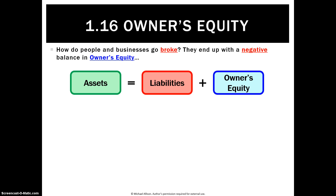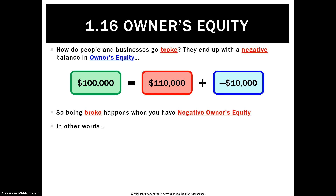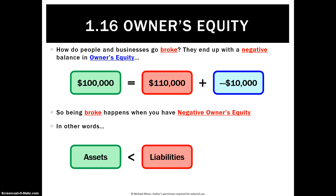How do businesses and people go broke? Essentially they end up with negative owner's equity. For example, if you had a $100,000 asset but owed $110,000, you'd have negative owner's equity. Fundamentally, if your assets are less than your liabilities, that means you are broke and bankrupt.